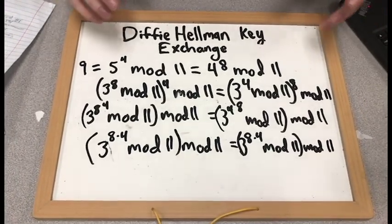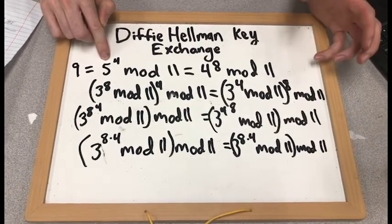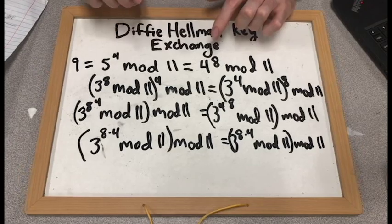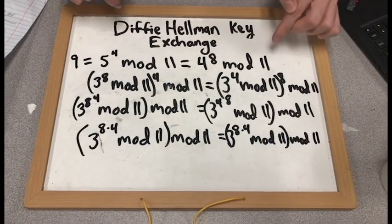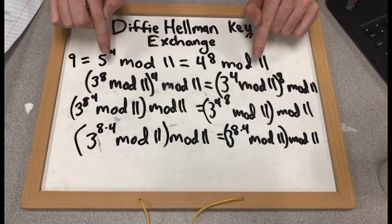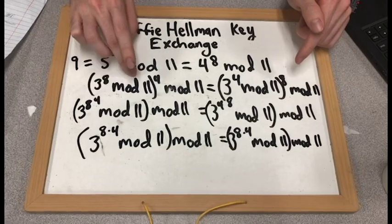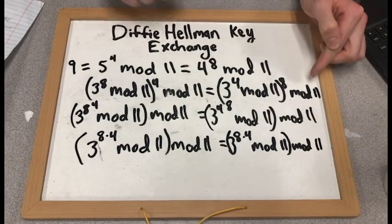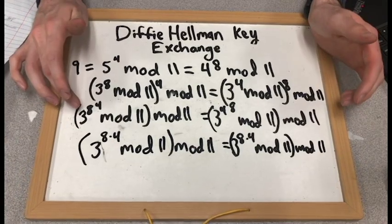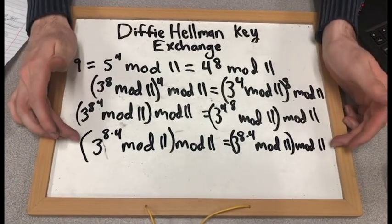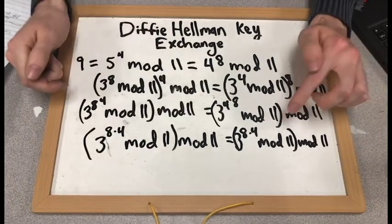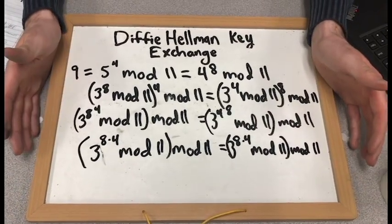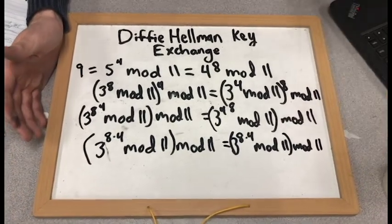But that doesn't show why X and Y got the same result, 9. To show this, we need to break the problem apart. So each equation for X, they used 5 to the 5, which is the result from Y, to the 4th mod 11. And Y used 4, which is the result from X, to the 8th mod 11. If we break these down into the calculations that X and Y did on their own, you get 3 to the 8th mod 11 to the 4th mod 11 equals 3 to the 4th mod 11 to the 8th mod 11. Using properties of modulo, this eventually ends up being 3 to the 8th times 4 mod 11 mod 11, which is equal to 3 to the 8th times 4 mod 11 mod 11, which shows why X and Y both got the same result as the private key.